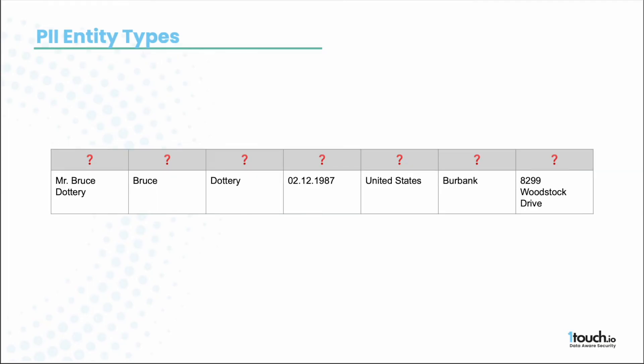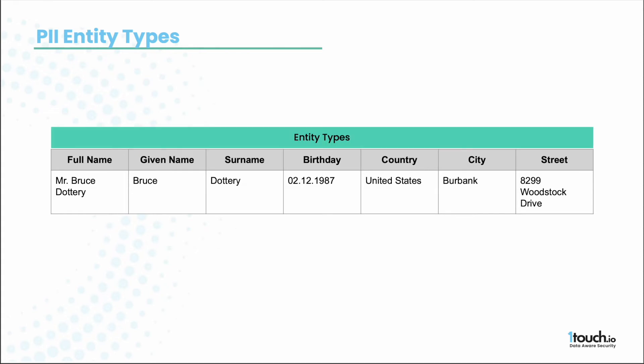Take a look at the table. Can you guess column names? Probably yes. It is clear that the first column is the full name, then there is a given name and so on. Basically, each column is a different entity type.